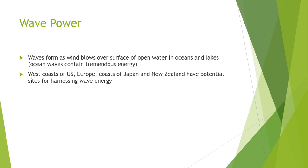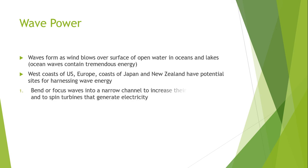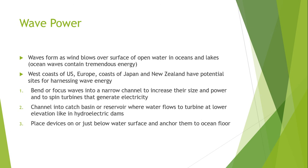Now let's discuss about wave power. Waves are generated when wind blows over the surface of oceans and lakes, and they carry a tremendous amount of energy. The west coast of the United States, coast of Europe, Japan, and New Zealand have potential sites for harnessing wave energy. The first method of wave power production is to bend or focus waves into a narrow channel to increase their size and power in order to spin a turbine that generates electricity.